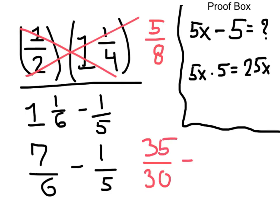And then, 30, also a common denominator for 1/5. To get 5 to 30, we multiply it by 6, so we're going to do the same to the numerator, and 6. And now that we have a common denominator, we can subtract them. 35 minus 6 is 29 over 30.